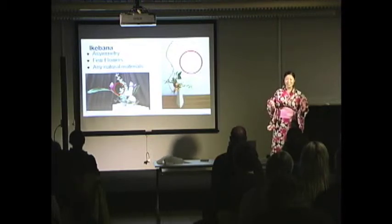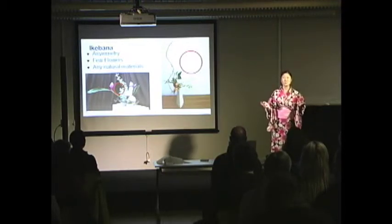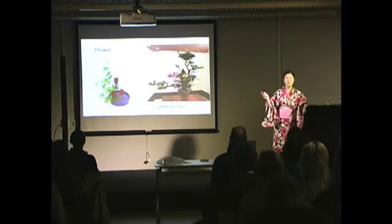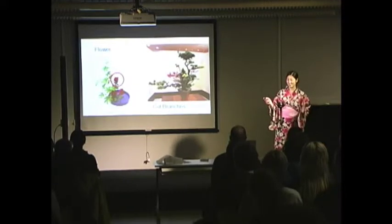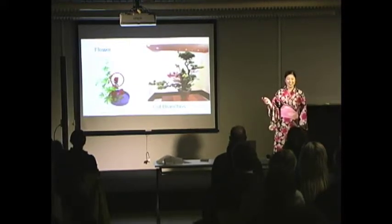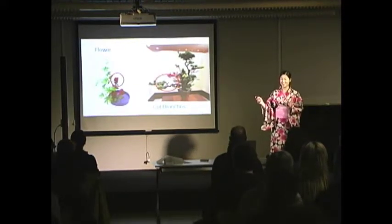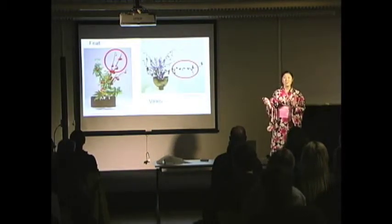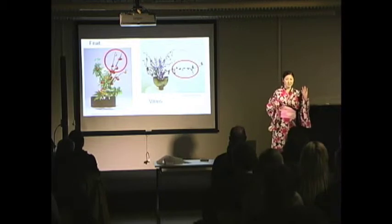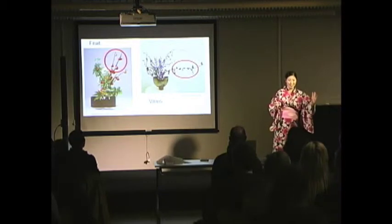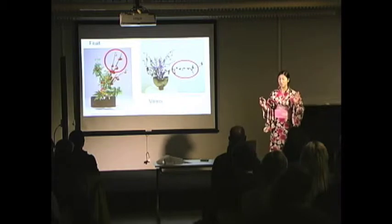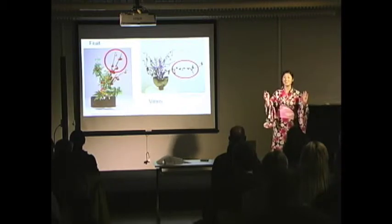Also, we can use any natural materials in Ikebana. For example, flowers are one of the common materials. Also, we can use cut branches, fruit, and vines. Therefore, the shape and the number of flowers are quite different between flower arrangement and Ikebana.